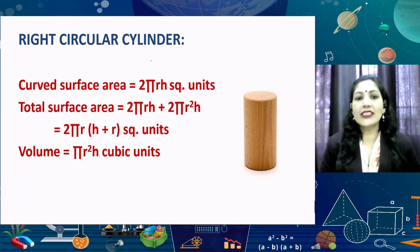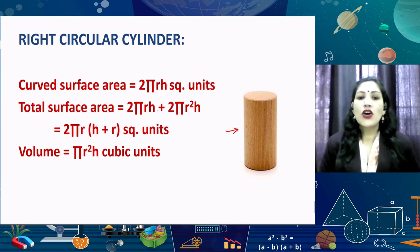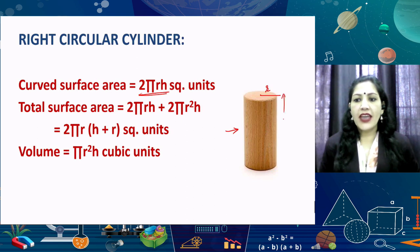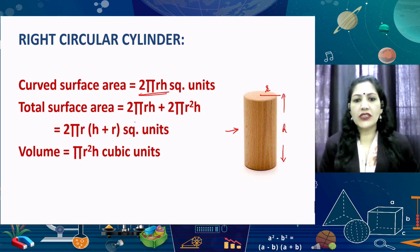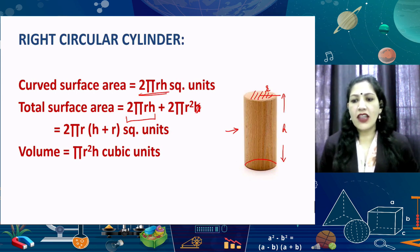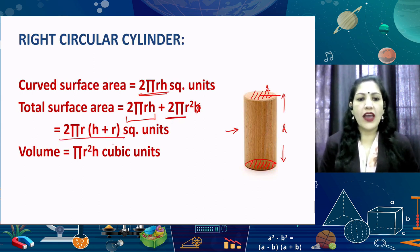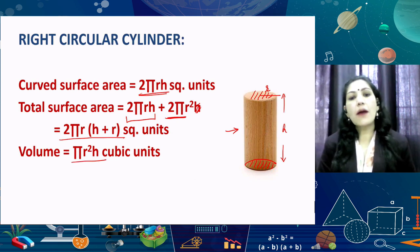The next shape is a cylinder. You have cylindrical shaped bottles, tube lights in the shape of a cylinder, and many more real-life examples. For a cylinder, the curved surface area is 2πRH, where R is the radius of the base and H is the height. The total surface area is 2πRH + 2πR² — that is the curved surface area plus the area of the circle at the base plus the area of the circle at the other end. So it simplifies to 2πR(H + R). The volume is πR²H.